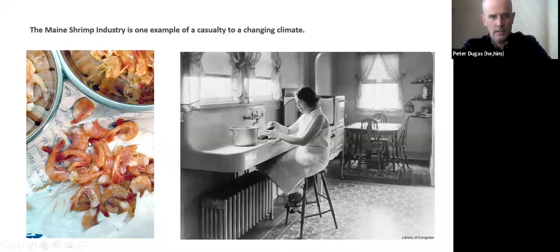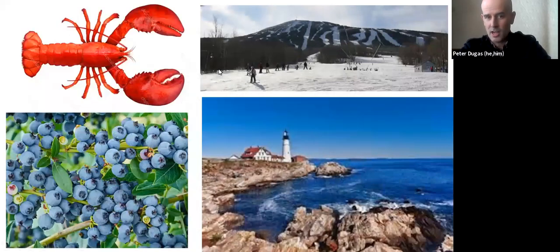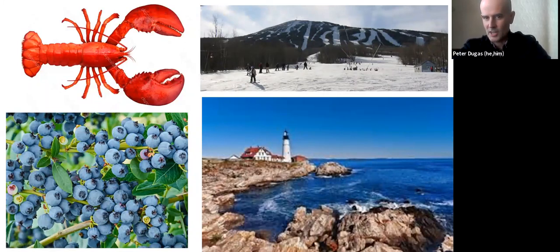I like to point out this image — this is not my mother-in-law peeling shrimp, just for the record. I could talk about all the other things Maine has to lose: winter recreation, and you could do this for your own states. It doesn't take too much imagination. This works for people's heartstrings, but also works if you're appealing to chambers of commerce — thinking about all the businesses that are going to go away.